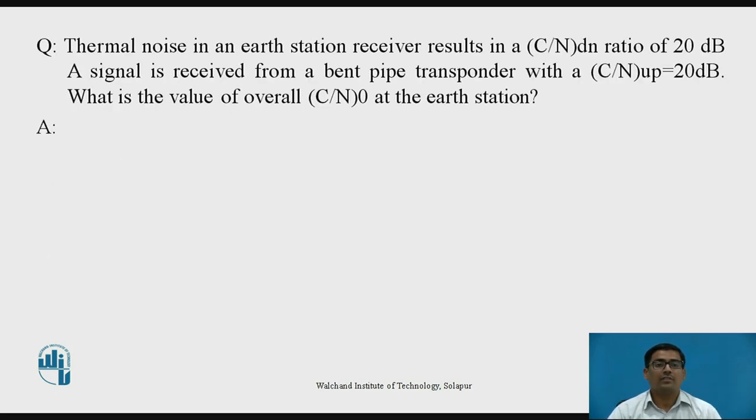A question: thermal noise in an earth station receiver results in a (C/N)_dn ratio of 20 dB. A signal is received from a bent pipe transponder with (C/N)_up = 20 dB. What is the value of overall C/N_0 at the earth station?